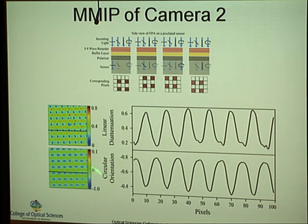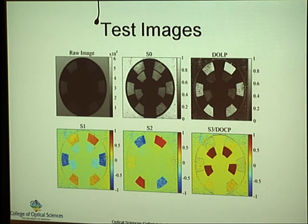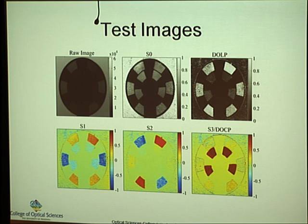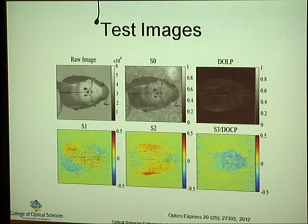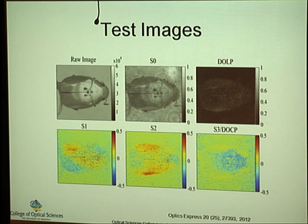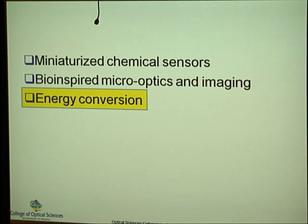This is the polarizer array for the second camera, with the circular orientation and linear diattenuation of the circular polarizer array measured using Chipman's setup. We went back to 4D Technology to bond another camera, and with this second camera we can see S3 and the degree of circular polarization — measuring all four Stokes components in the visible. And of course we went back and measured the beetle, observing the degree of circular polarization associated with its exoskeleton. We started with the beetle and ended with the beetle — everything goes in a circle.